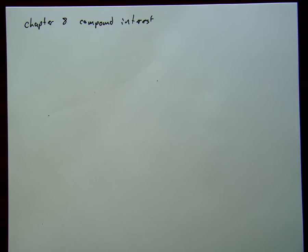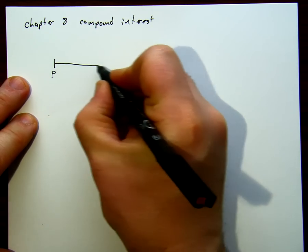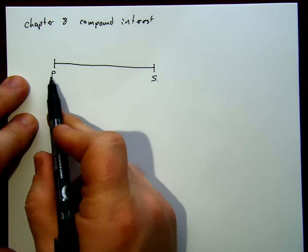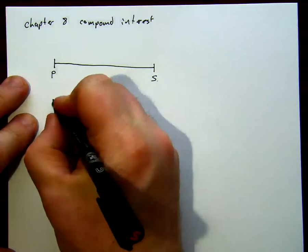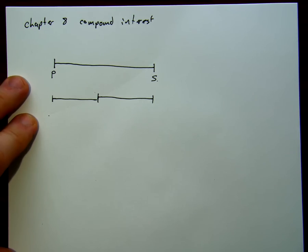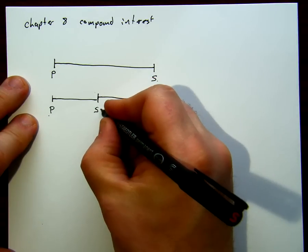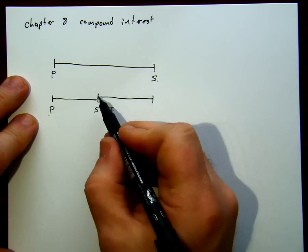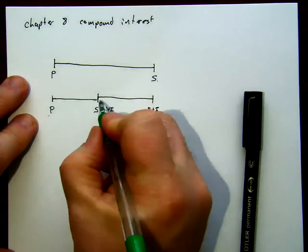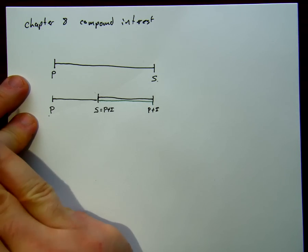We've already seen this with our simple interest formula. What we've done in simple interest is we said we had some amount that we invest, P, and over time we're going to gain interest on it, and this is going to be a value of S. We had an investment of P; at some point in the middle we had a value of S, which was equal to principal plus interest, and then we reinvested that — also principal plus interest. We notice this line is higher because we're actually investing not just the principal, but the principal plus the interest. So we had interest on a slightly larger amount. This is compounding.